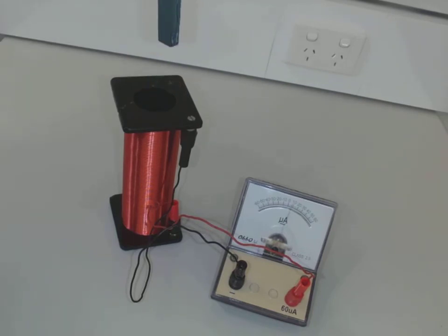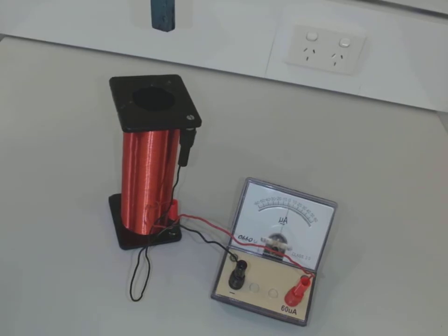If we change the direction, I notice that when I plunge the magnet in, the needle drifts off to the right initially. If I change the direction of the magnet and do it again, it drifts off to the left.